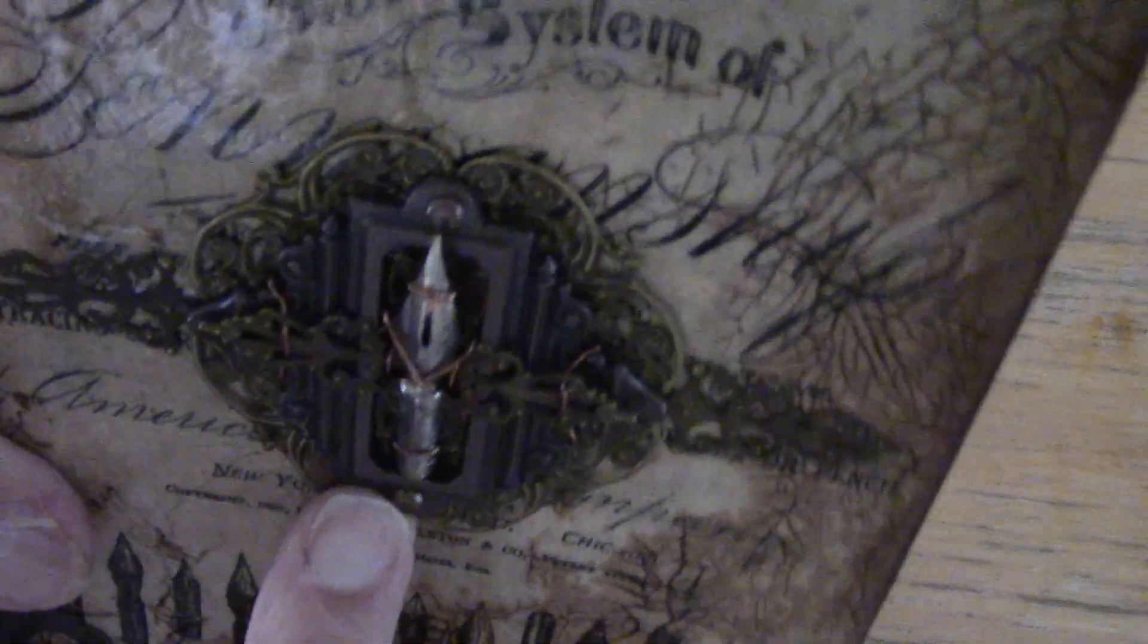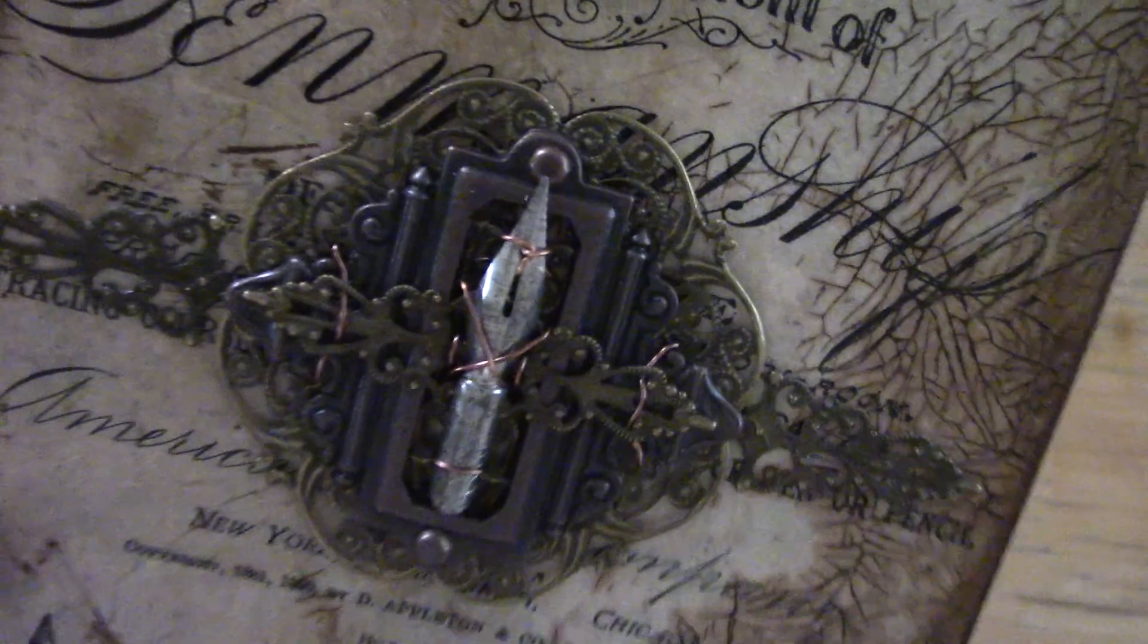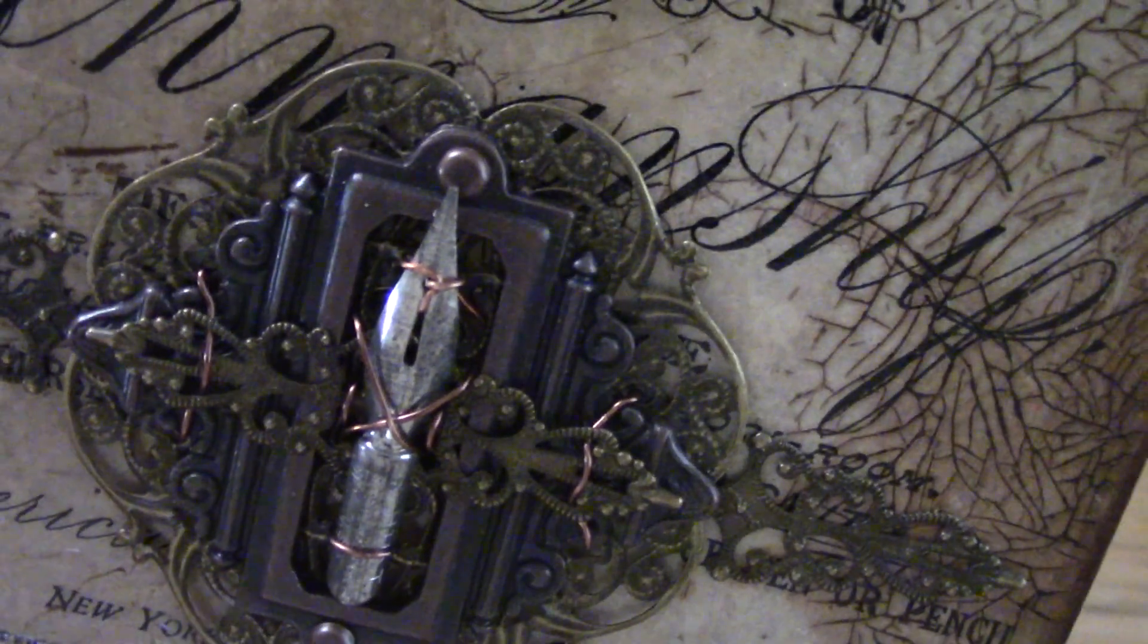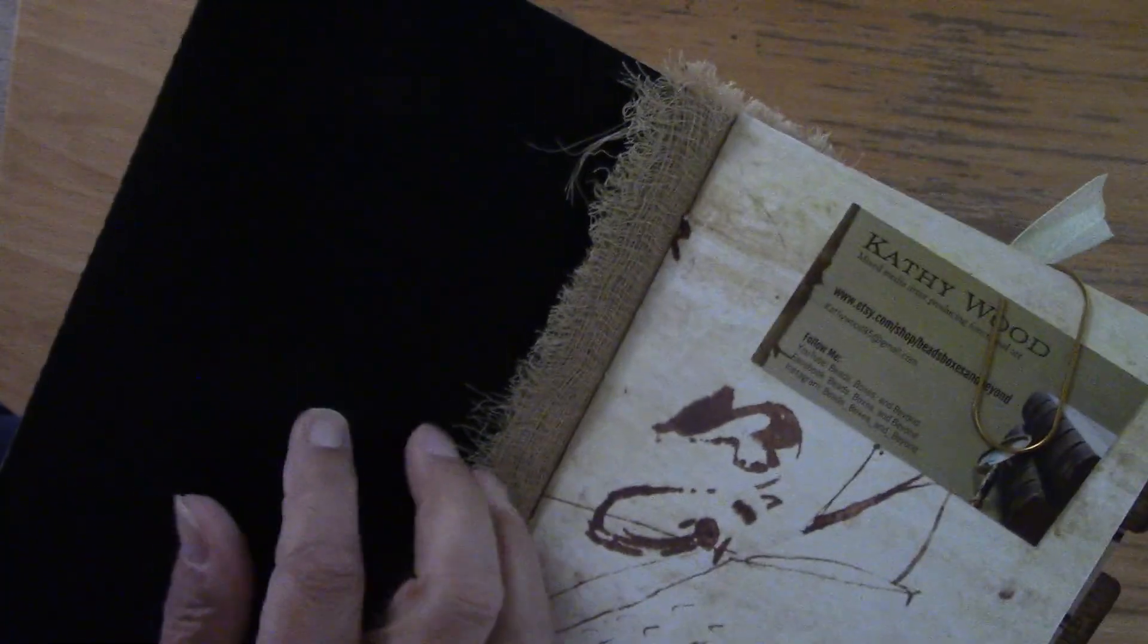And then of course the emblem on the front is just stacked pieces of metal work. And then I laced it together with some copper wire, and it is actually secured through the cover on this side, but it's covered up by the felt that I have.